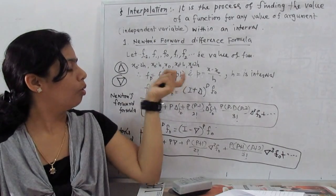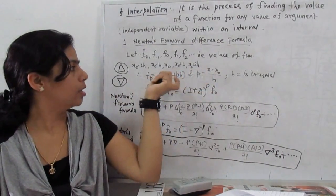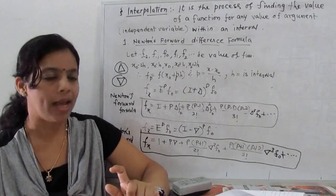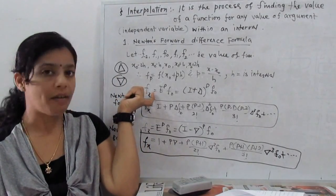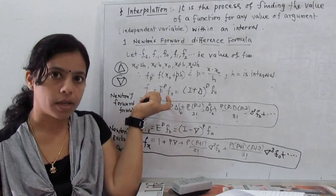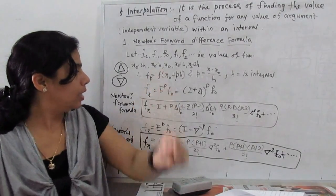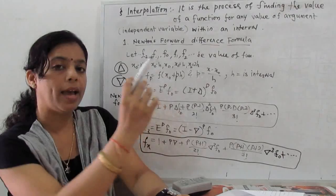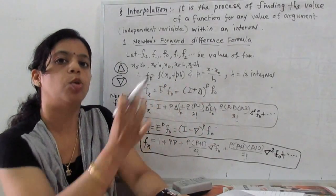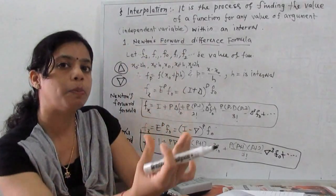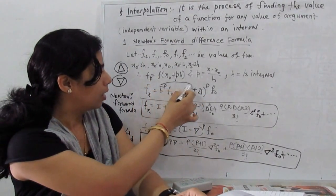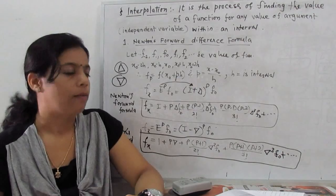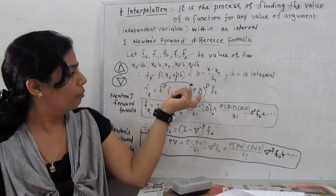We can say the function value at point p is x₀ + ph, where p is given by p = (x − x₀) / h, and h is the constant interval. Hence the function value f(x) at any point is given by the shifting operator: f(p) = eᵖ · f(0). Here e is the shifting operator, f(0) is at x₀, and eᵖ shifts one value forward. We now learn the relation between the shifting operator e and Newton's forward operator: e = 1 + Δ.